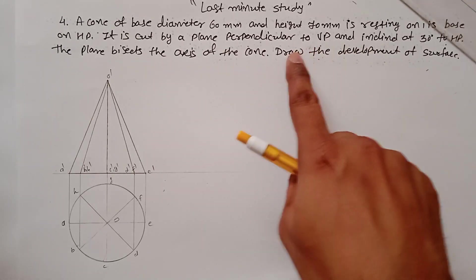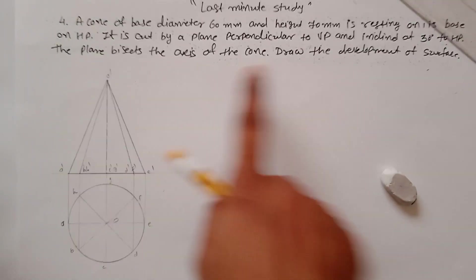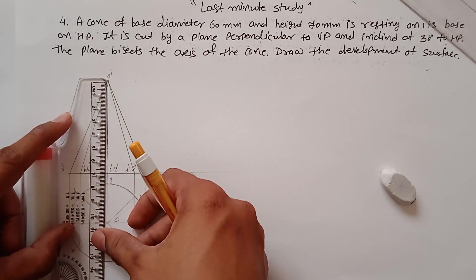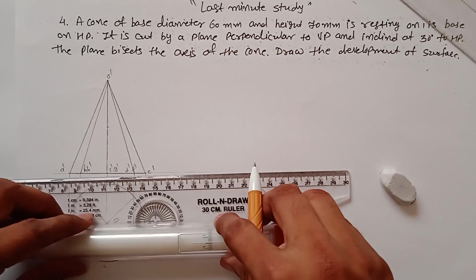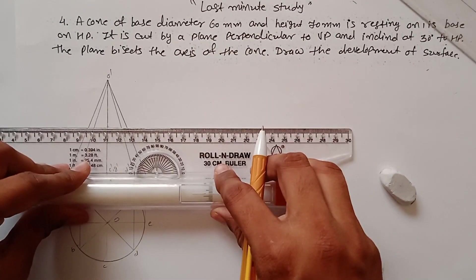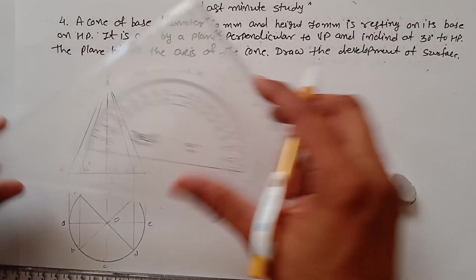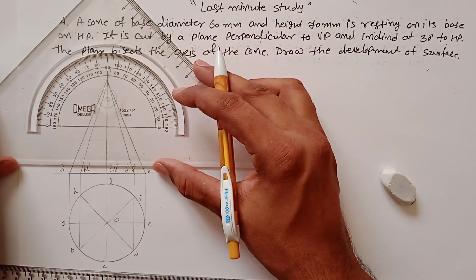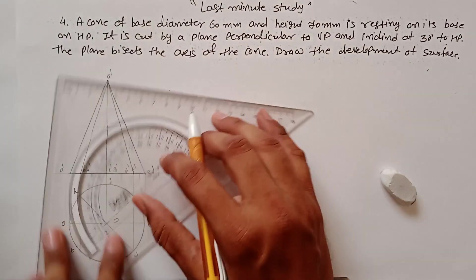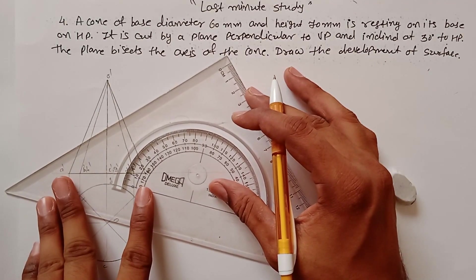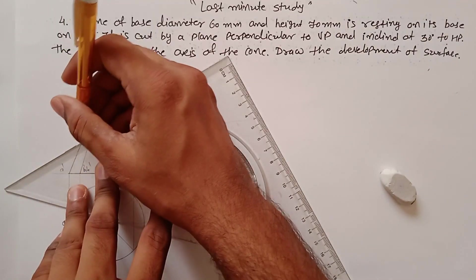Now find the sectional part. The cone is cut by a plane perpendicular to VP and inclined at 30° to the HP. The plane bisects the axis of the cone — the height is 70mm, so the bisection point is at 35mm. Draw a horizontal line there, then measure a 30° angle from this line and draw a sectional cutting line passing through the center of the axis.